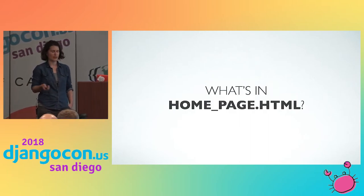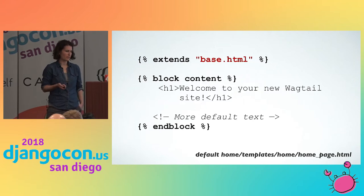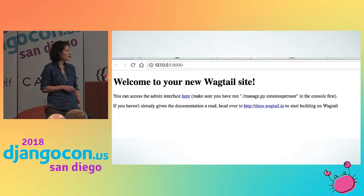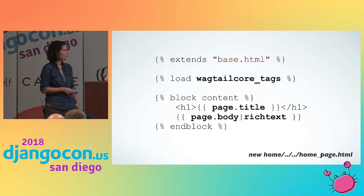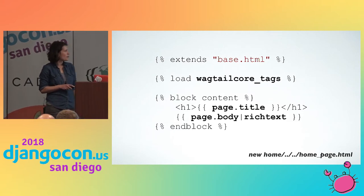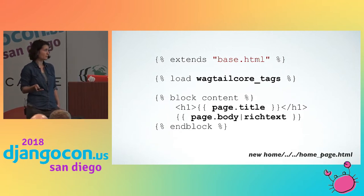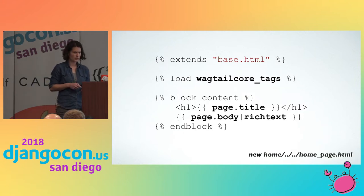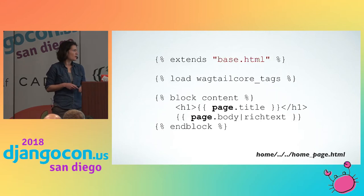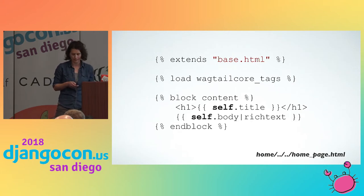If we went to that site now, it would still show that really ugly default home page because we haven't done anything to the template yet. This is a pretty standard Django template — it extends from a base and you've got your block content that you can swap out. We reference the body field we added to our model and drop it into our content with a rich text filter. That rich text filter lets you use those rich text fields we added in the models. Also note that page is your context, so you use page.title or page.body — you can also use self.title or self.body.